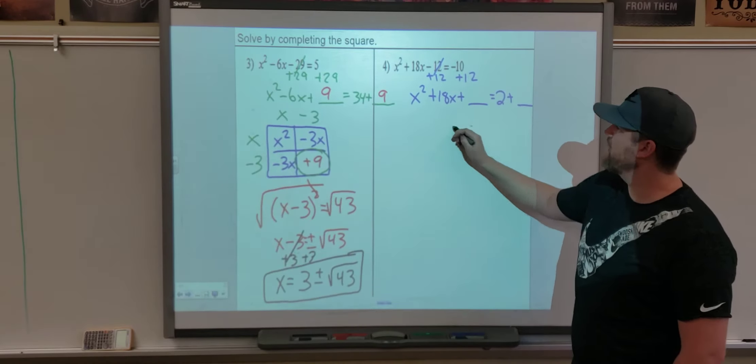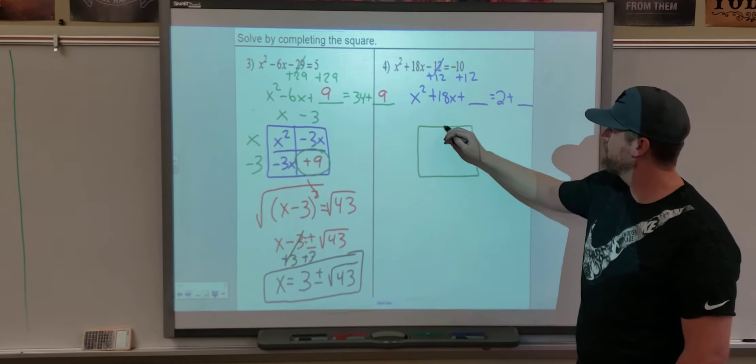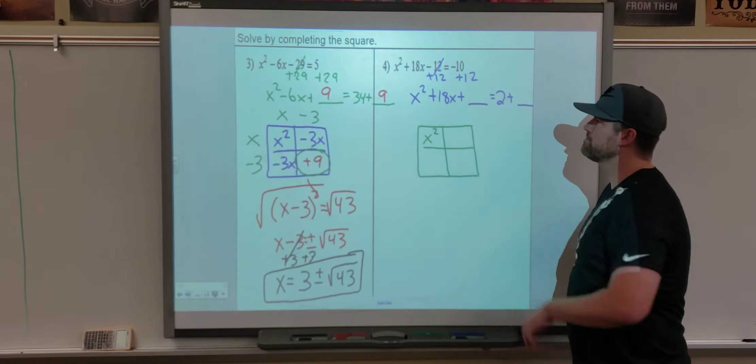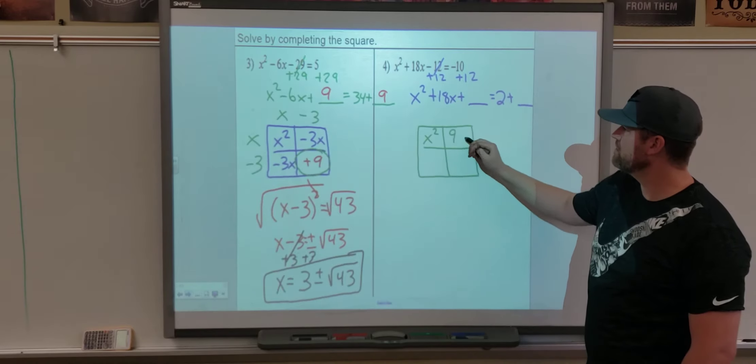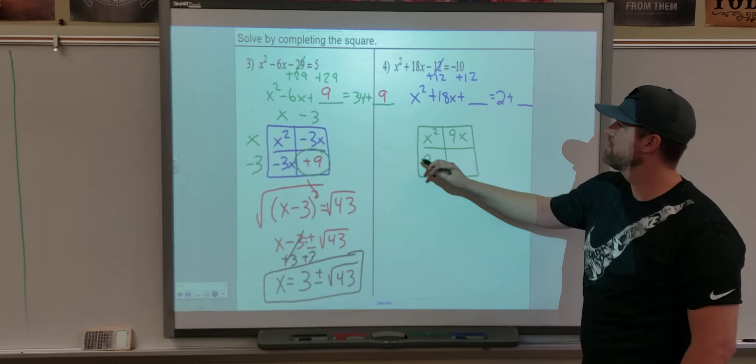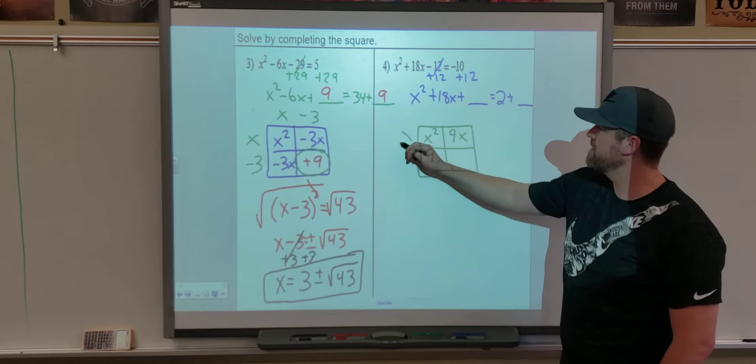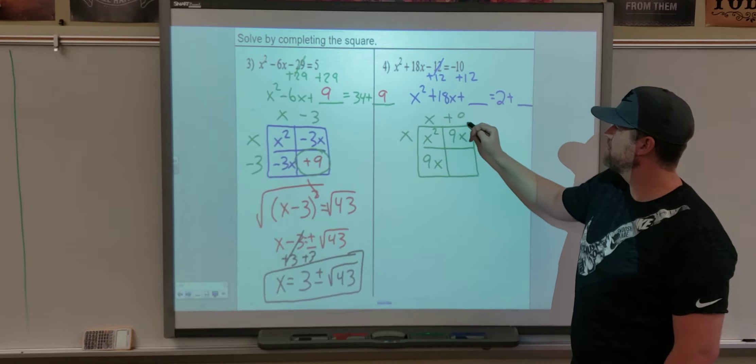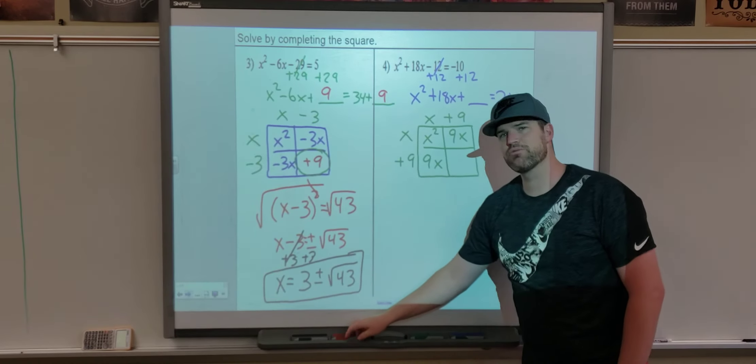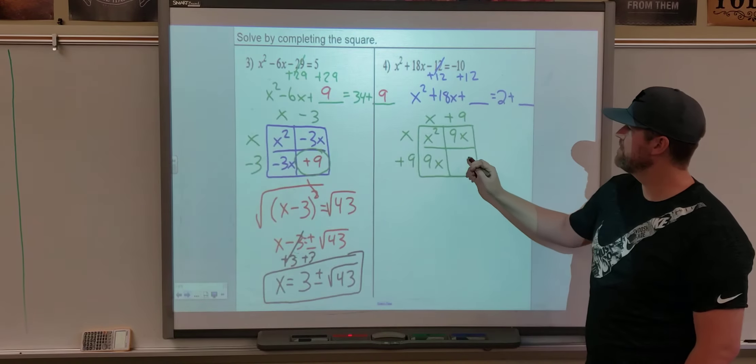Make our square, make our square, first term, first box, split the middle term. So half of 18 is 9, so 9x and 9x. And then factor around the outside, and we should get a nice, perfect square, which leaves us with a new c value of 81.